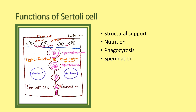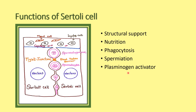The mature sperm cells are attached with the apex of the Sertoli cells. For the detachment of the sperm from the apex of the Sertoli cell — a process called spermiation — plasmin is needed. So plasminogen activator is produced from the Sertoli cell; it activates plasminogen to plasmin, which helps in the detachment of the mature sperm from the apex of the Sertoli cell.